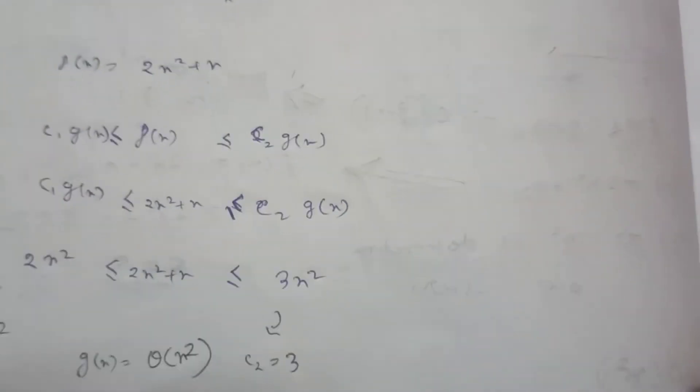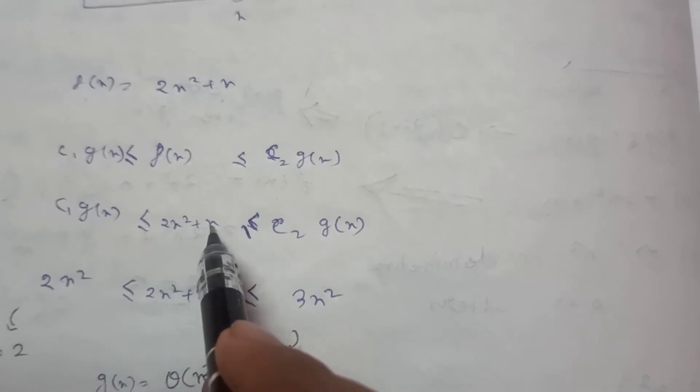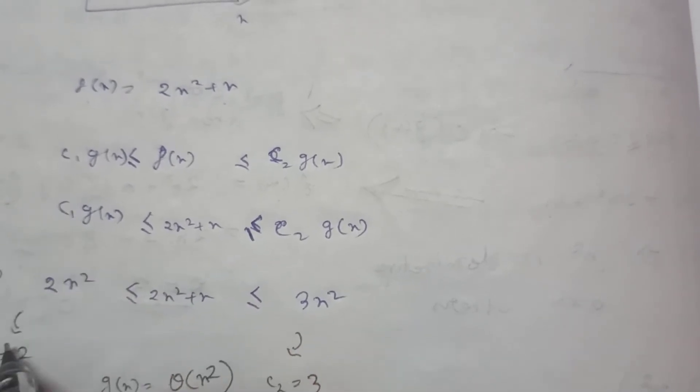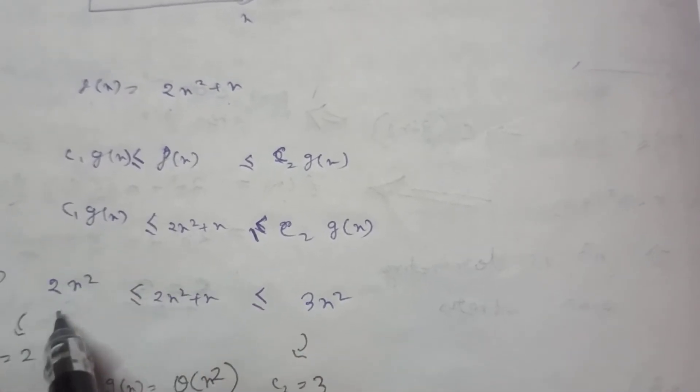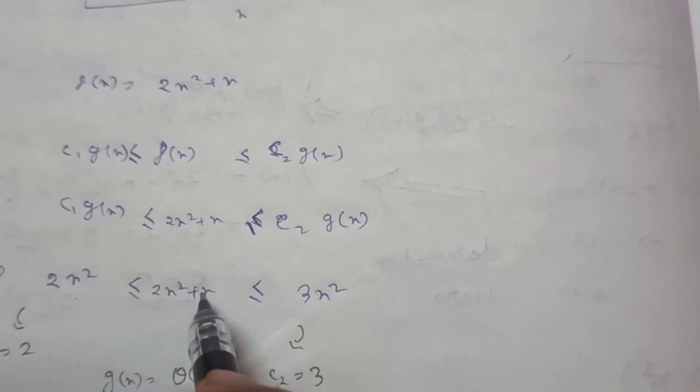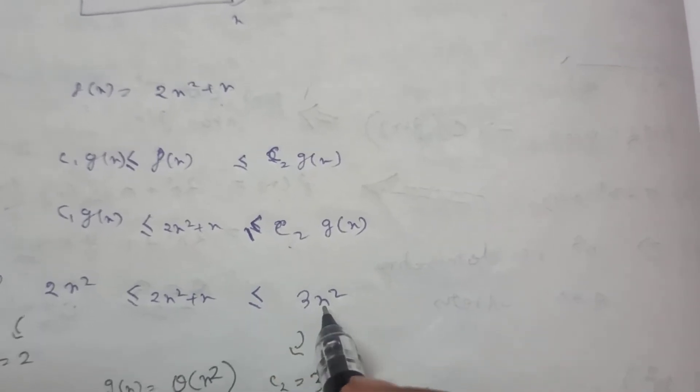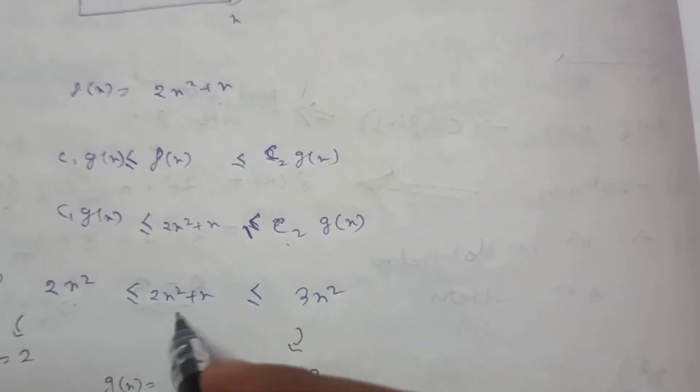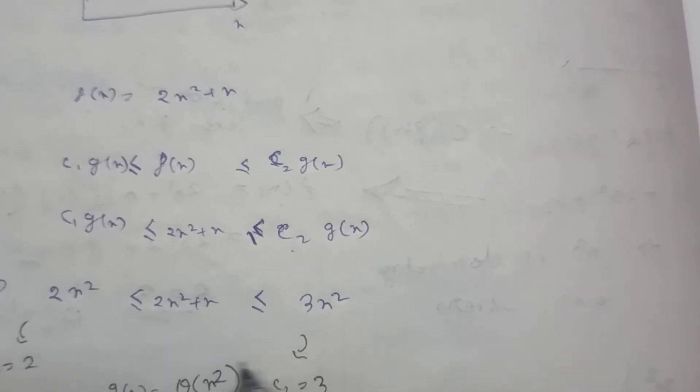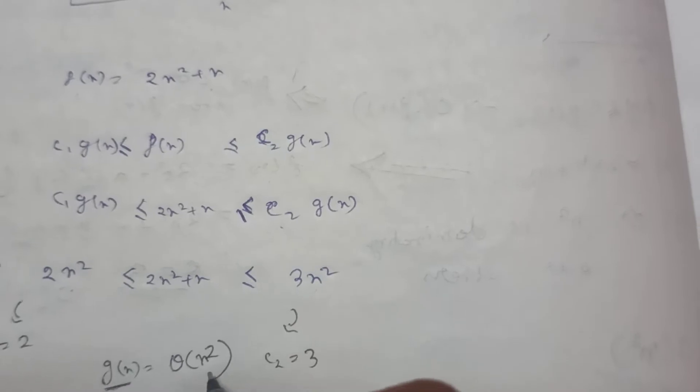So c1 times n squared will be less than 2n squared plus n. If value of c1 is 2, then its value will be 2n squared, which is just less than 2n squared plus n. And if we put value of c2 as 3, then it will be 3n squared, which will be just above the value 2n squared plus n. So this will give us our theta notation, theta of n squared.